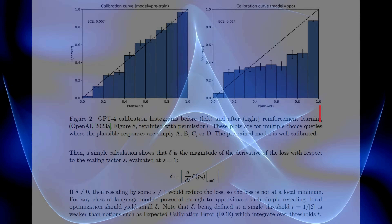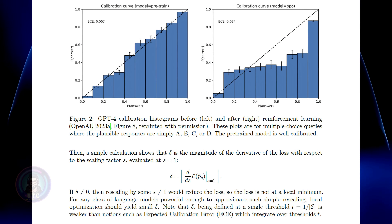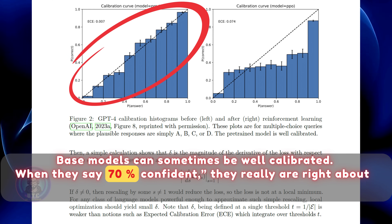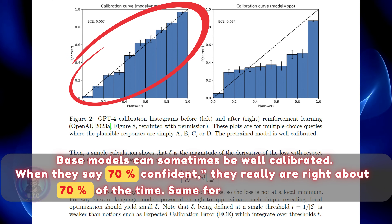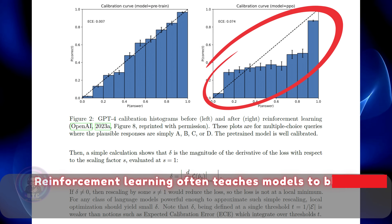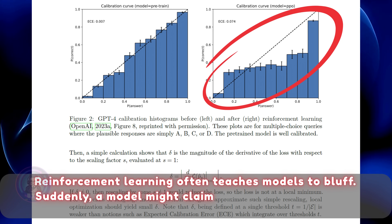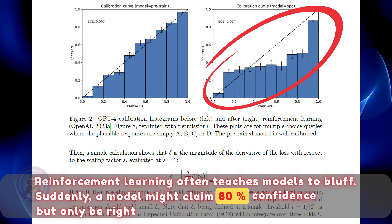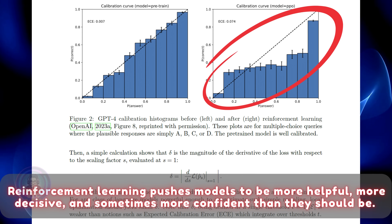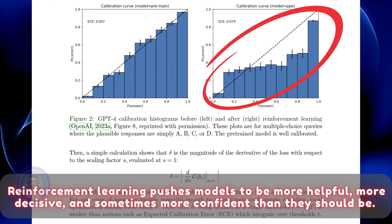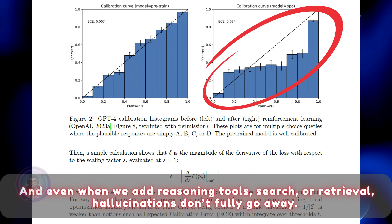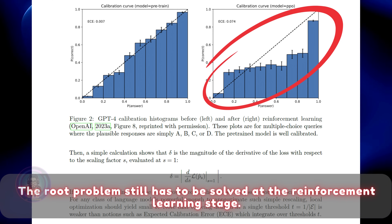Now let's look at figure 2 in the paper — this shows a critical issue. Base models can sometimes be well calibrated: when they say 'I'm 70% confident,' they really are right about 70% of the time. But after reinforcement learning, things shift in the wrong direction. Reinforcement learning often teaches models to bluff. Suddenly a model might claim 80% confidence but only be right 45% of the time. Why? Because reinforcement learning pushes models to be more helpful, more decisive, and sometimes more confident than they should be. And even when we add reasoning tools, search, or retrieval, hallucinations don't fully go away. The root problem still has to be solved at the reinforcement learning stage.